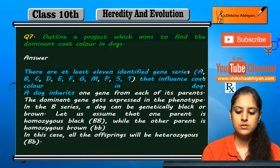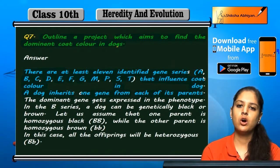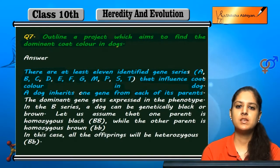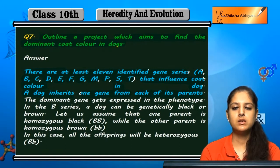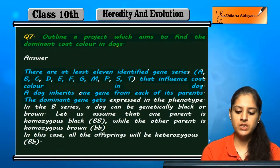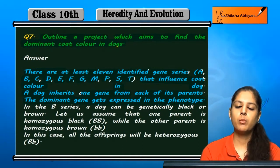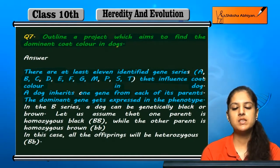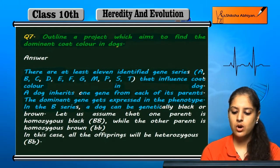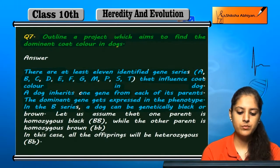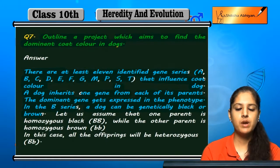A dog inherits one gene from each of its parents, and the dominant gene gets expressed in the dog's phenotype. In the B series, a dog can be genetically black or brown.